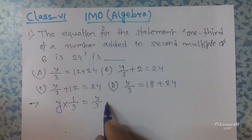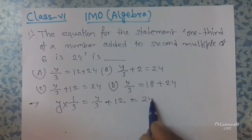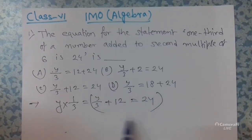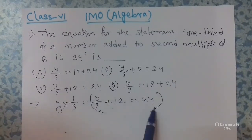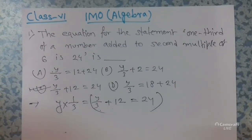Added to the 2nd multiple of 6, which is 12, equals 24. So the correct equation is y/3 + 12 = 24. Option C is the correct answer.